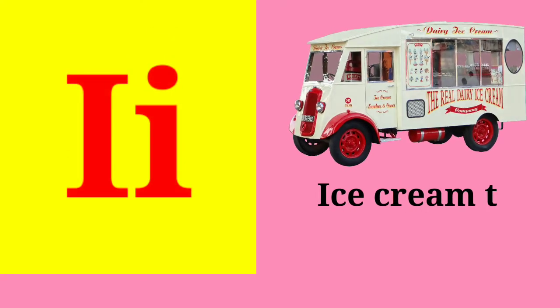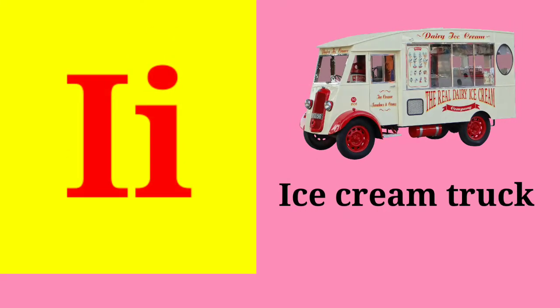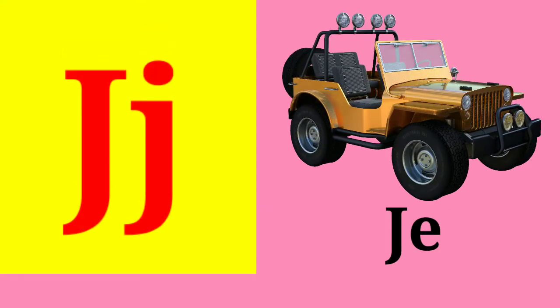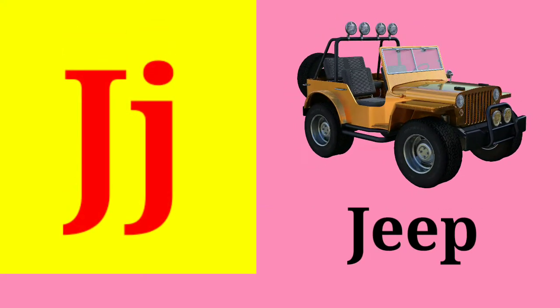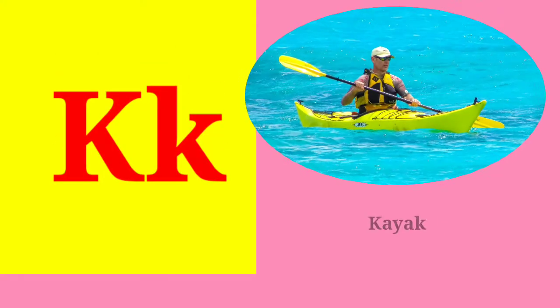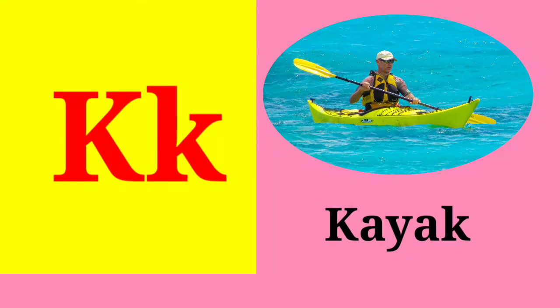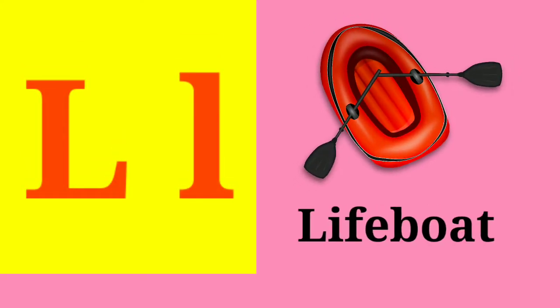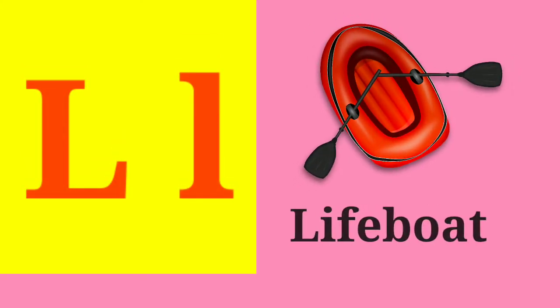I. I is for ice cream truck. J. J is for jeep. K. K is for kayak. L. L is for lifeboat.